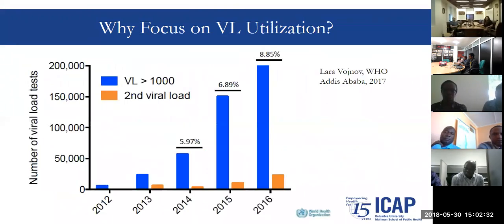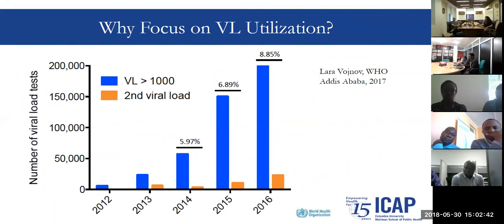This is a slide that Lara Vajnoff shared at the ASLM meeting, which shows in blue — in a multi-country dataset — the number of individuals who had an unsuppressed viral load, and then the much, much smaller number who had a second viral load test.